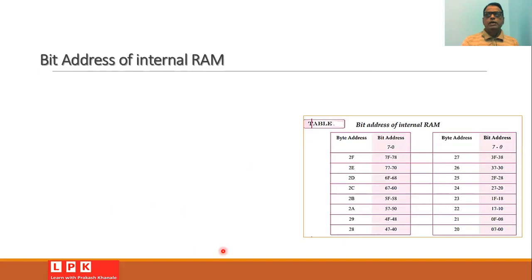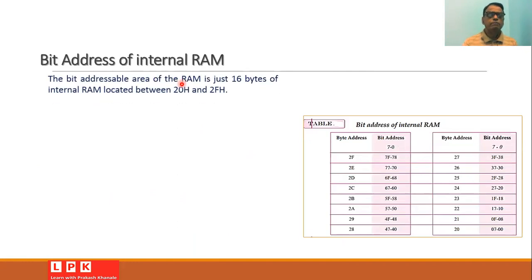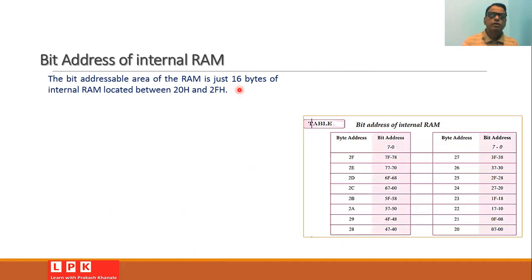Before we start discussing the different instructions, let us understand the bit addresses of the internal RAM for the 8051. The bit-addressable area of the RAM is just 16 bytes of the internal RAM, and it is located from 20h to 2Fh hexadecimal.